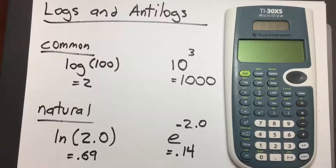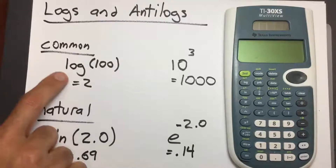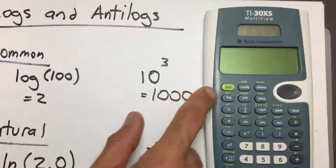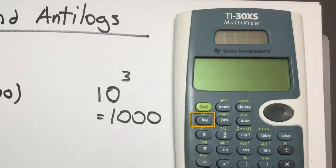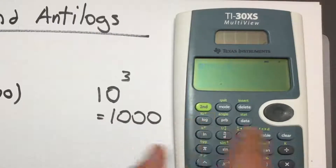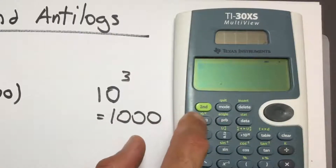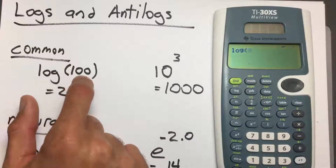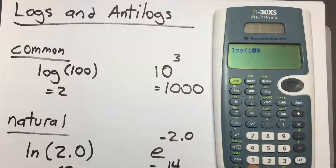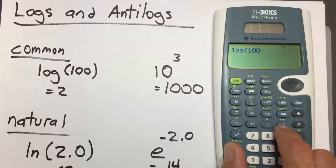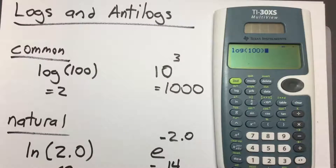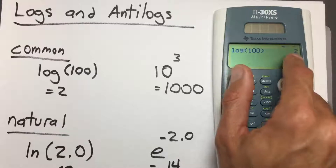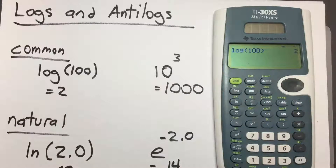Now for the TI-30XS. To do the common log, we look for a button that says LOG — that's right here under the 2nd key. Clear the screen and press LOG. Enter the number 100, since the open parentheses is placed for us. Close the parentheses and press enter, and we get exactly the answer we were expecting.